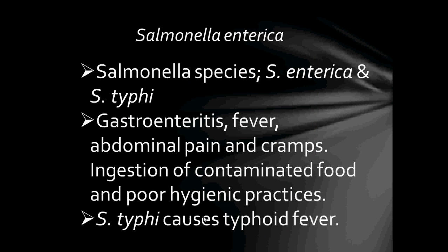Salmonella species of great importance include Salmonella enterica and Salmonella typhi. Salmonella typhi causes typhoid fever. Salmonella enterica on the other hand causes gastroenteritis, fever, abdominal pain, and cramps, usually due to ingestion of contaminated food and poor hygienic practices. Salmonella typhi and typhoid fever will be covered in a separate lecture.